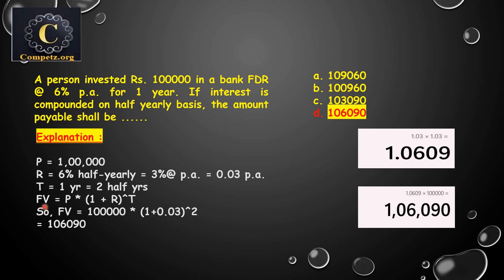Now we calculate the future value. The formula is: FV equals P multiplied by (1 plus r) raised to the power of n. This is the important formula for calculating future value with compound interest.